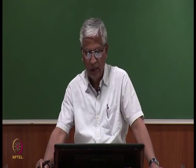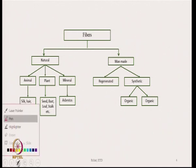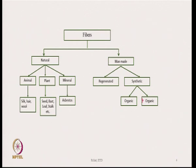There are two types of fibers: natural fibers and manmade fibers. Within natural fibers we have animal fibers, plant-related fibers, and mineral fibers. Manmade fibers include regenerated fibers and synthetic fibers, which are further divided into organic and inorganic types.